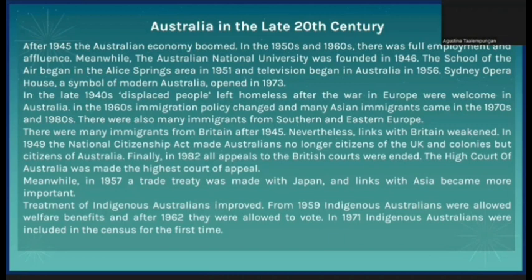The High Court of Australia was made the highest court of appeal. In 1957, a trade treaty was made with Japan and links with Asia became more important. Treatment of indigenous Australians improved from 1959. Indigenous Australians were allowed welfare benefits, and after 1962 they were allowed to vote. In 1971, indigenous Australians were included in the census for the first time.